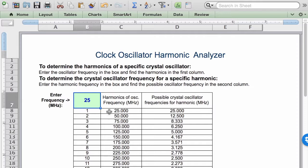For example, here in the first line, we have the fundamental frequency of 25 megahertz. In the second one, this is the second harmonic of 50. The third harmonic is 75 and so forth.